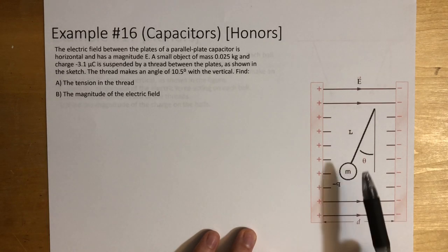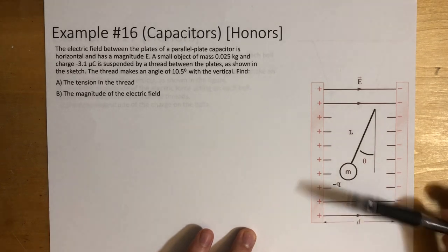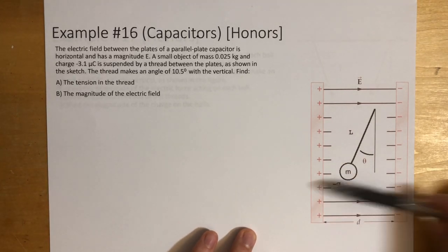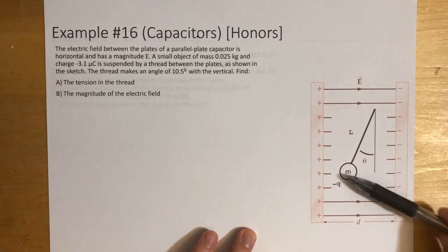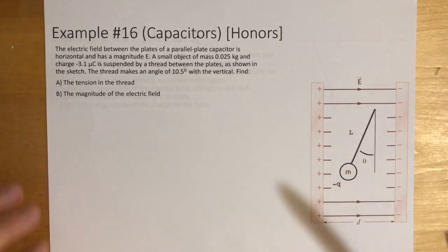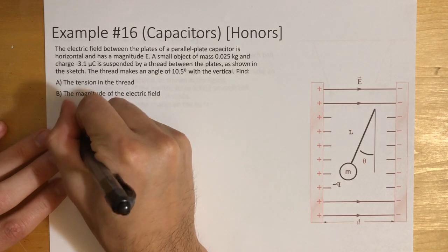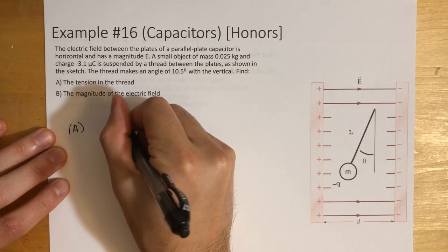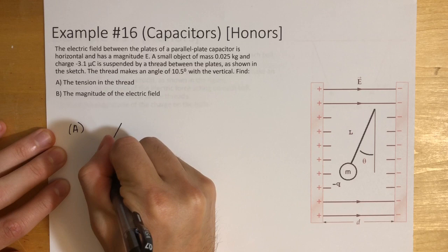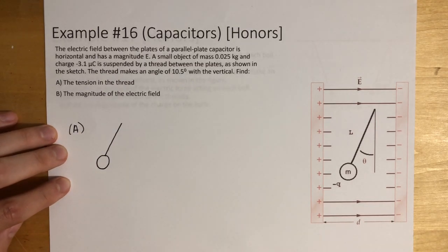We can see that the charge is negative because the electric field is going to the right and the charge is going to the left — if the charge goes in the opposite direction, that means it's negative. So let's find out what the tension is going to be. Let's draw this out and think about all the forces we're going to have.